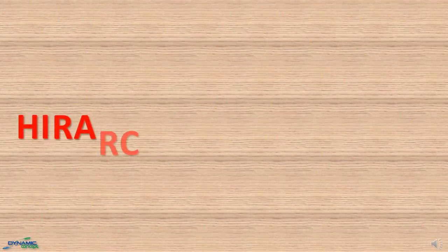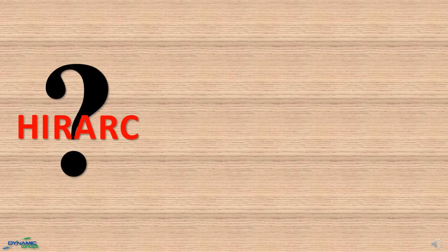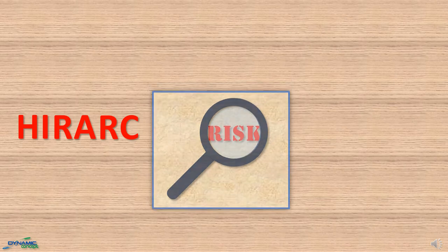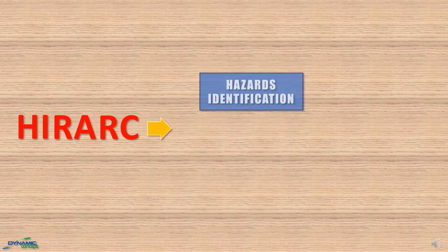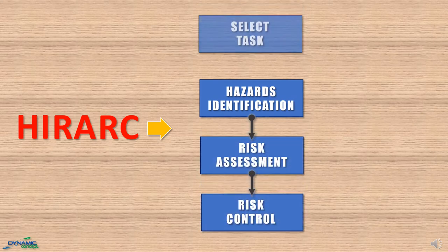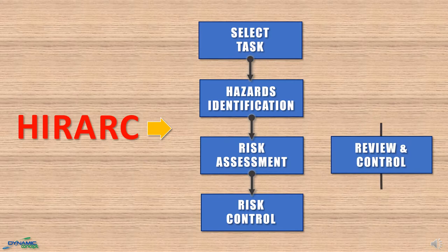One of the tools to achieve this objective is HIRAC. What is HIRAC? HIRAC is a method of analyzing risk of hazard which is widely used by occupational safety and health practitioners in any fields of industries. The word HIRAC itself describes the steps in conducting risk assessment. HIRAC stands for Hazard Identification, Risk Assessment, and Risk Control. To make it a complete process, we need to add up a few steps.